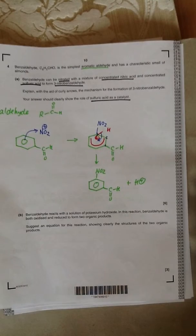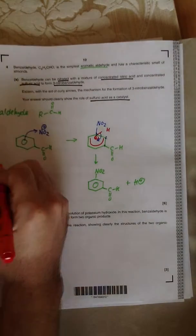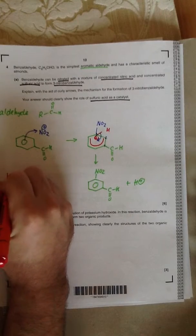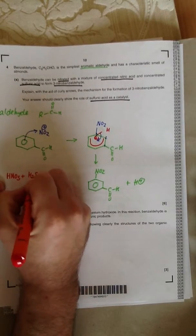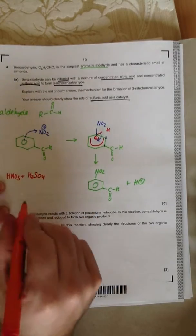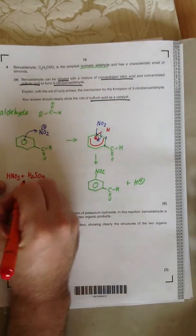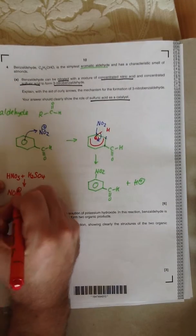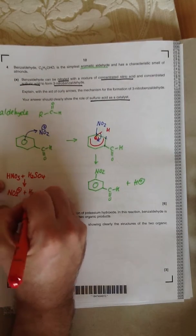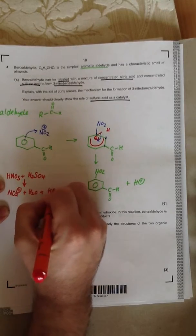So remember, a catalyst is something that speeds up the reaction by producing an alternative reaction pathway, but a catalyst is not used up in the reaction. So the equations you need to know for this: if we start by using our nitric acid and our sulfuric acid, the products that we get, written down here, are NO2+ ion. We also get water, and we also get HSO4-.